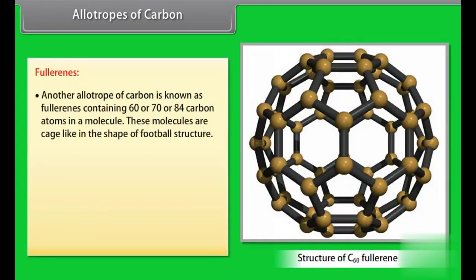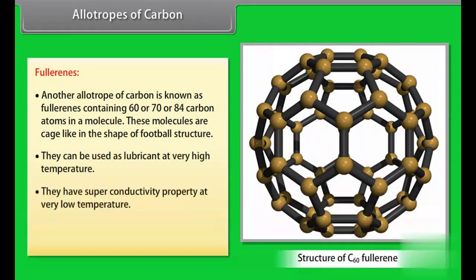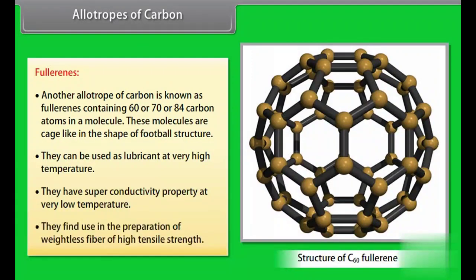Fullerenes. Another allotrope of carbon is known as fullerenes containing 60 or 70 or 84 carbon atoms in a molecule. These molecules are cage-like in the shape of football structure. They can be used as lubricant at very high temperature. They have superconductivity property at very low temperature. They find use in the preparation of weightless fiber of high tensile strength.